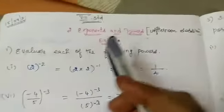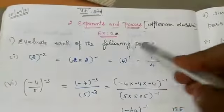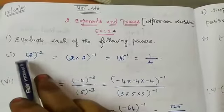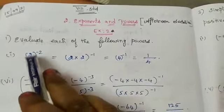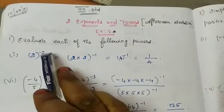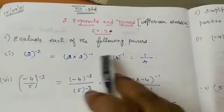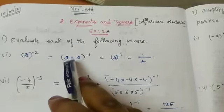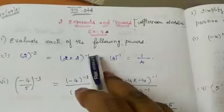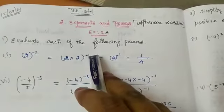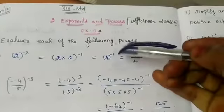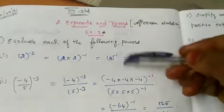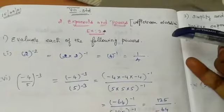Now Exercise 2 — evaluate each of the following powers. 2^(-2): first, 2 multiplied 2 times is 2 × 2 = 4. The power of 2 is resolved, leaving the minus, so the minus changes to plus meaning reciprocally we get 1/4.